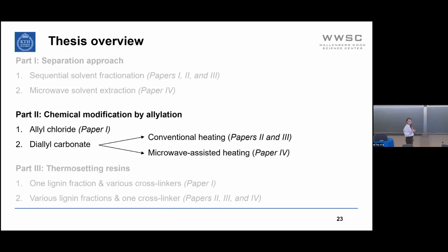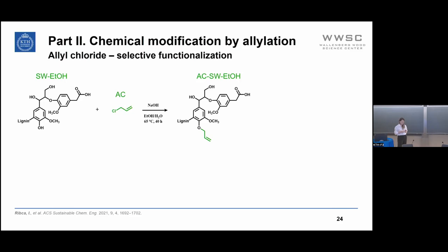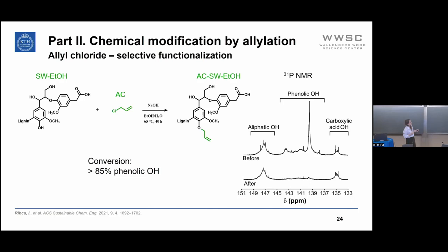Moving to Part 2 — chemical modification and allylation. By using allyl chloride, we were able to selectively functionalize lignin. For this study we chose only the softwood ethanol fraction. The reaction was carried out at 65°C for 40 hours and selectively allylated the phenolic OH with a conversion higher than 85%. This was confirmed by phosphorus NMR, which showed that the phenolic OH signal drastically decreased while aliphatic and carboxylic signals remained unchanged.